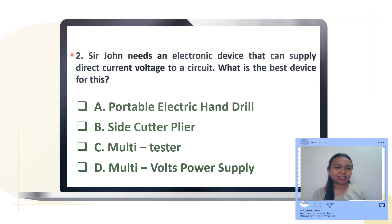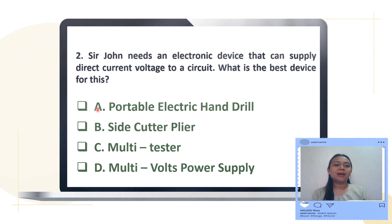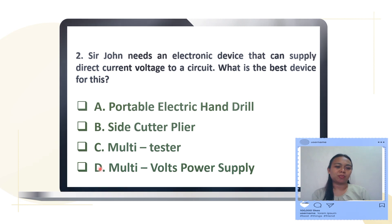Number two: Sir John needs an electronic device that can supply direct current voltage to a circuit. What is the best device? Is it A. portable electric hand drill, B. side cutter plier, C. multi-tester, or D. multi-volts power supply? The correct answer is D, multi-volts power supply.